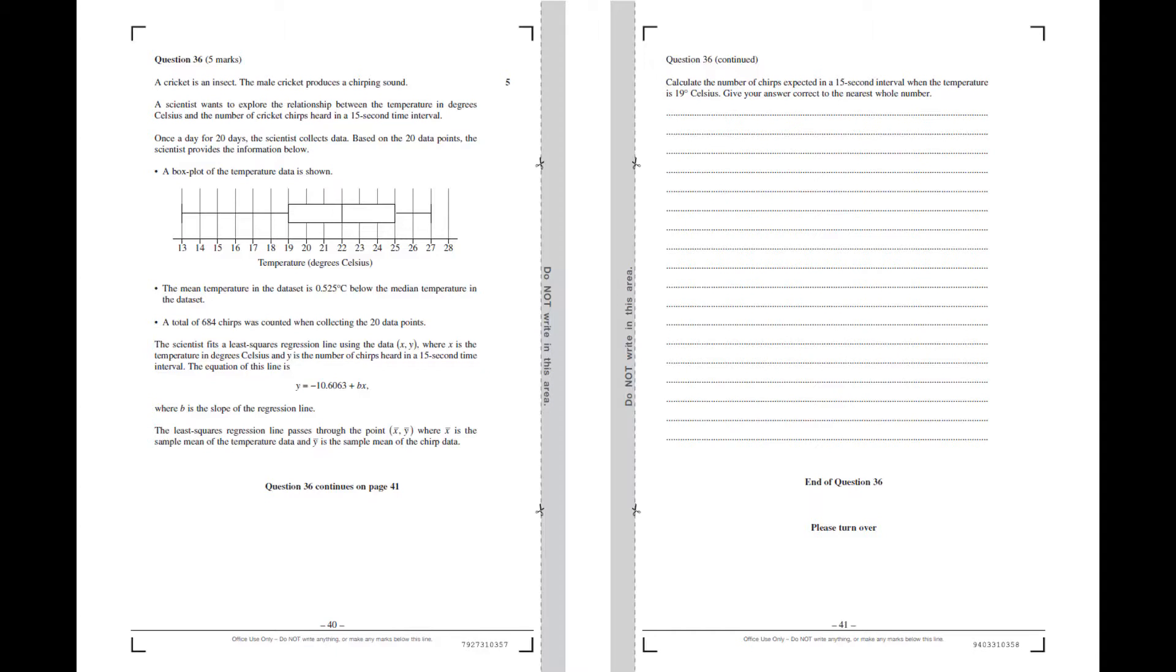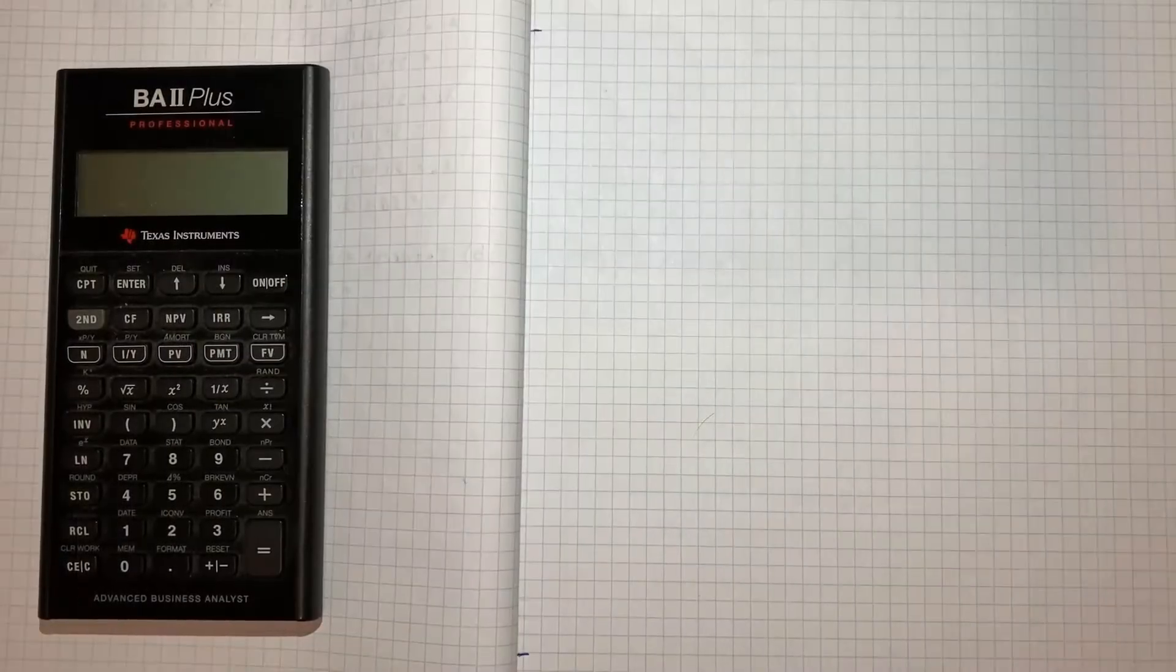Over the page we're then given the question, which is to calculate the number of chirps expected in a 15 second interval when the temperature is 19 degrees, and we want to give our answer correct to the nearest whole number. All right, so where to begin?